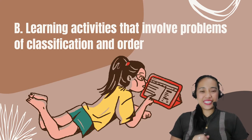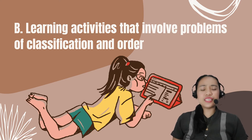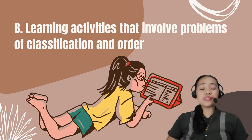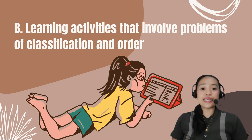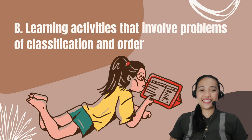The correct answer is Letter B. A child in the concrete operational stage, ages 7 to 11, needs skills in classification and order, which requires appropriate use of logic.